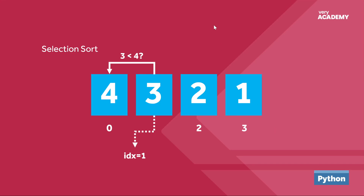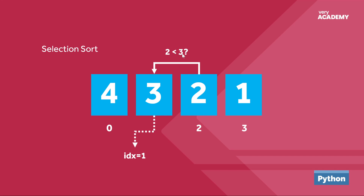Step one: selection sort starts at position one and grabs the number three. We compare three to four — is three less than four? In this case it is, so we place the position of this number, which is position one, into a new variable called idx. That's the first step. The internal loop now loops over the next items starting from position two, and we perform the same action again: is two less than three?